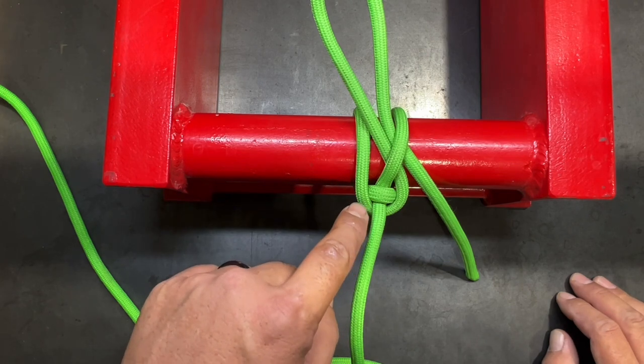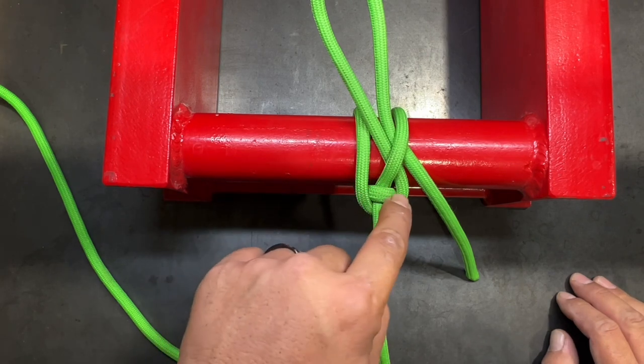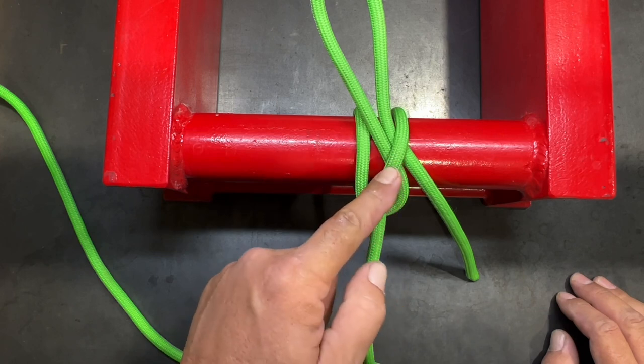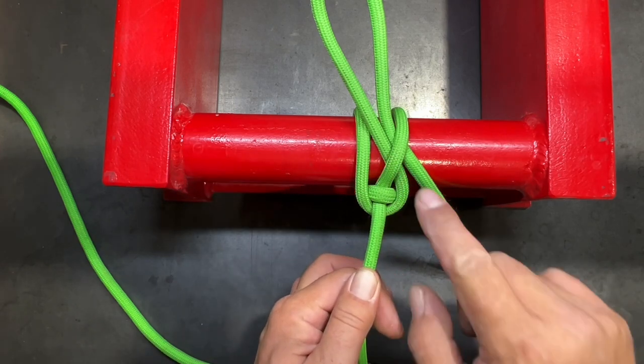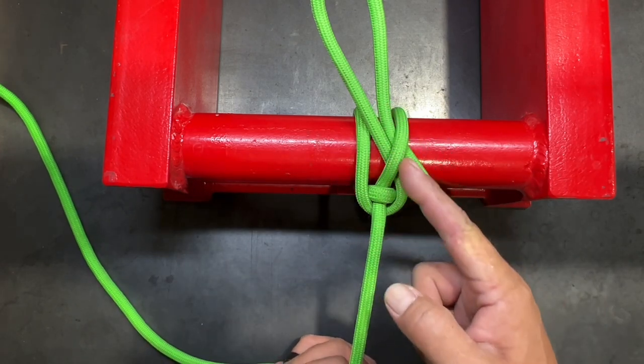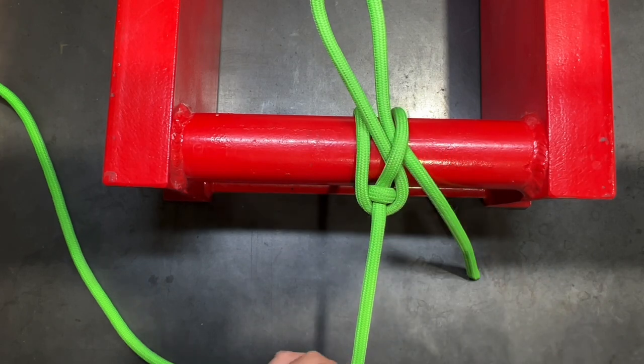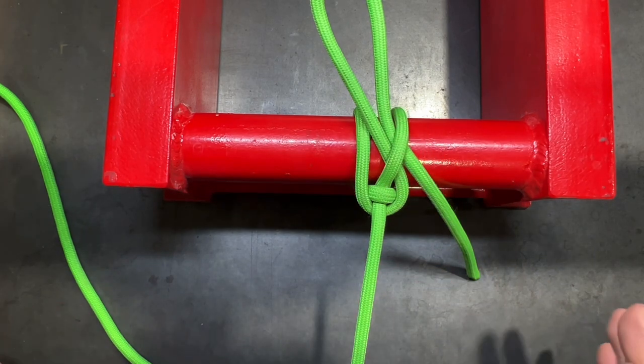So first of all you have the loop here that's holding your load on your standing end, and you also have the locked slip which prevents it from loosening on itself.